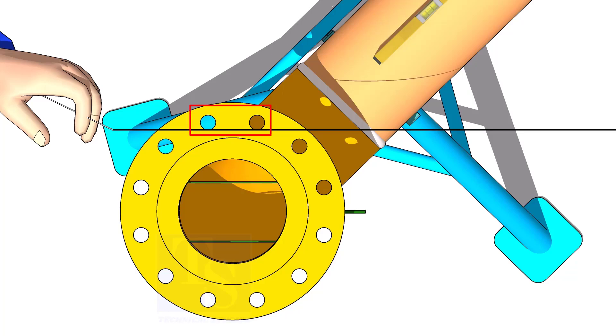Usually, pipe fitters choose side holes. But I recommend choosing the holes closer to the center of the flange for more accuracy.